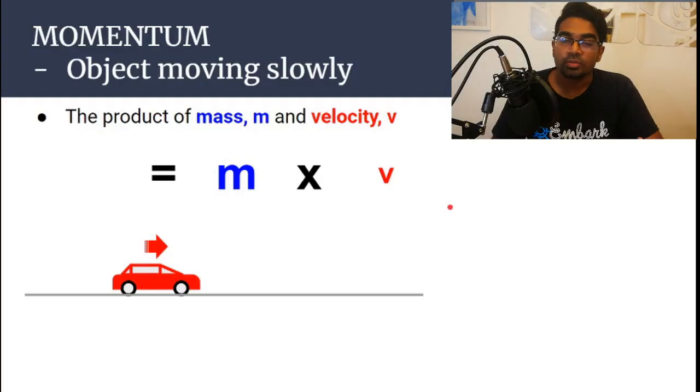Momentum is directly proportional to velocity. What does that mean? Let's look at this. If the value of the velocity is small, let's say an object is moving slowly and therefore velocity will be very small.